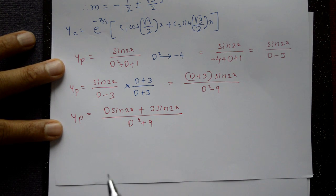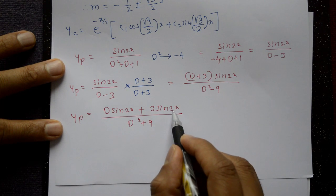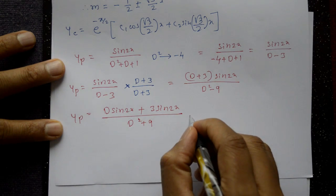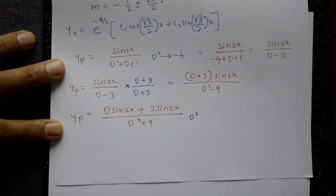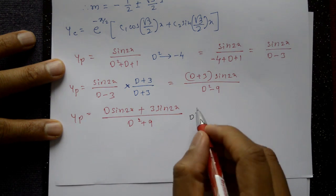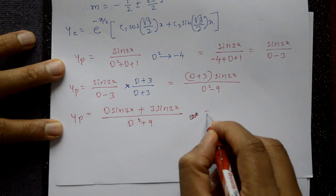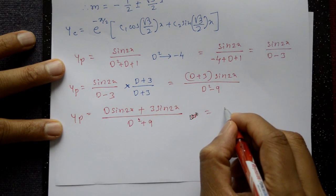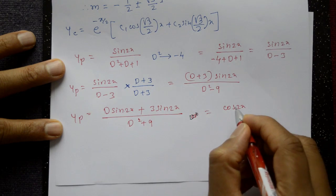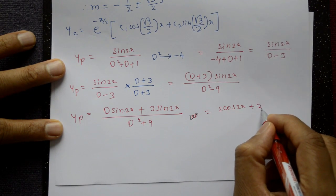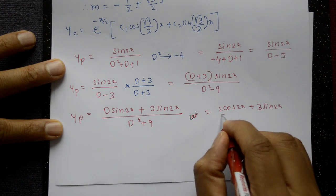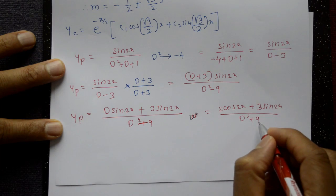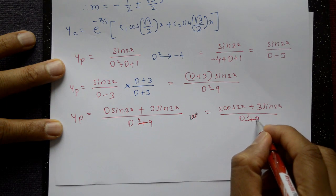Now, for both terms sin2x and cos2x, a = 2 is the same. Differentiating sin2x: D·sin2x = 2cos2x. So the numerator becomes 2cos2x + 3sin2x, divided by (D² − 9). Applying D² = −4 to the cos2x term as well, since the argument is the same.